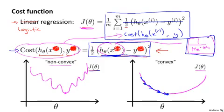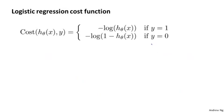So what we'd like to do is come up with a different cost function that is convex, so that we can apply gradient descent and be guaranteed to find the global minimum. Here's the cost function we're going to use for logistic regression. The cost or penalty that the algorithm pays if it outputs h of x and the actual label turns out to be y is: minus log h of x if y equals 1, and minus log of 1 minus h of x if y equals 0.